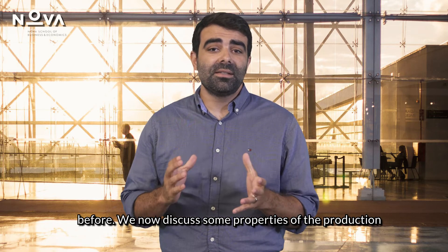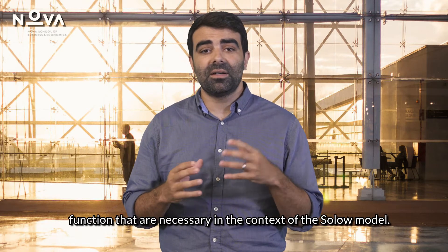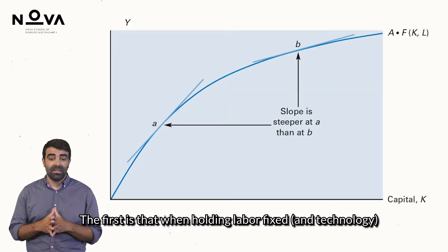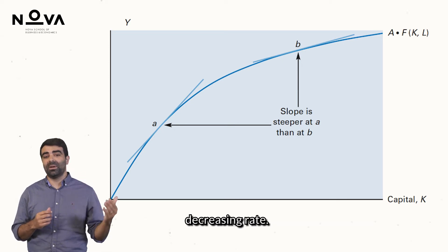We now discuss some properties of the production function that are necessary in the context of the Solow model. The first is that when holding labour fixed and technology fixed, increases in capital lead to more output but at a decreasing rate.